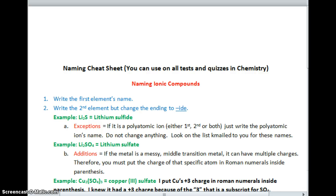Hi Chemistry, this is KJ here. We are going to go over 4.07 naming covalent compounds. I'm starting with the naming cheat sheet. Make sure you downloaded this. It's in your key mail as well. You can use it on all tests and quizzes.